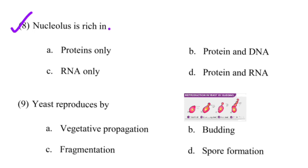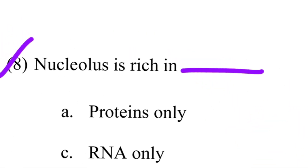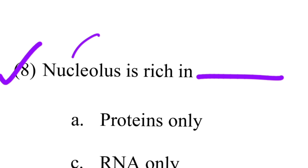Next question: Nucleolus is rich in dash. The options are protein only, protein and DNA, RNA only, and protein and RNA. The correct answer is option D — protein and RNA. The nucleolus is rich in both protein and RNA.